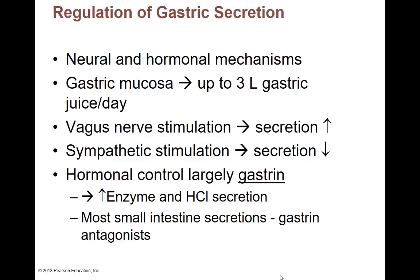Nervous system-wise, we have vagus nerve stimulation — that's going to increase your secretion. The vagus nerve relates to nerves in your facial and head region. The fact that you actually have food in your mouth, you can feel it in your oral cavity, or you're chewing and tasting it — that's all part of your vagus nerve signaling the stomach to prepare for food and start increasing secretion. Even smelling food will increase stomach secretions — this is why if you walk into a room and smell popcorn, your stomach starts to gurgle. Even seeing food can start increasing your gastric juices.